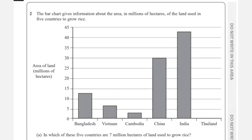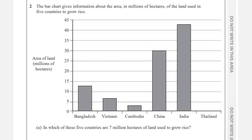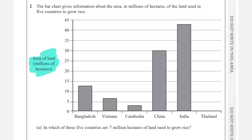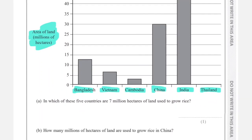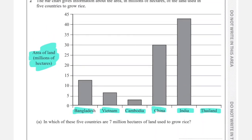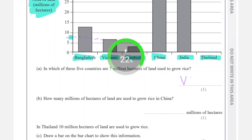The bar chart gives information about the area in millions of hectares of land used in five countries to grow rice. On the left-hand side we have the area, and on the x-axis we have the countries: Bangladesh, Vietnam, Cambodia, China, India, and Thailand. For Thailand there is no bar yet. Question (a): in which of these five countries are 7 million hectares of land used to grow rice? The answer is Vietnam.